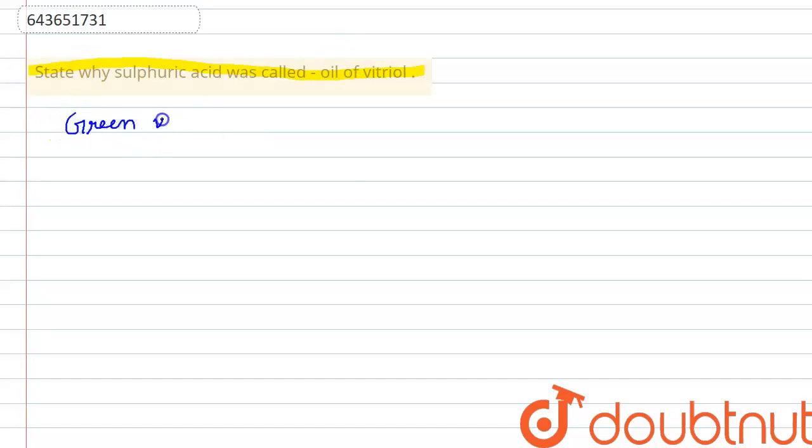Green vitriol, which has the molecular formula FeSO4·7H2O, which is ferrous sulfate with seven water of crystallization, undergoes distillation process to form H2SO4.